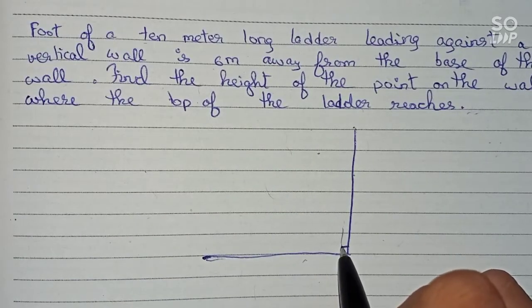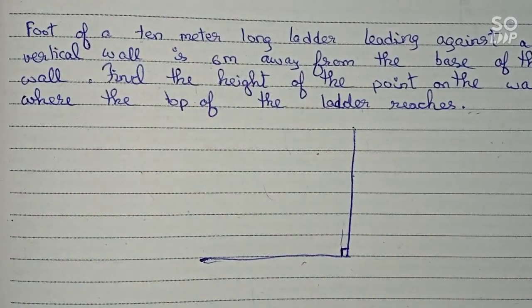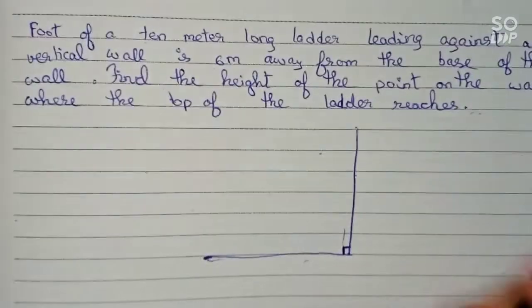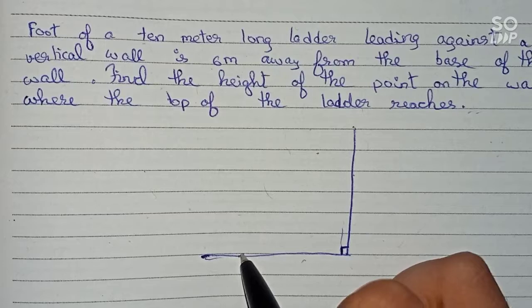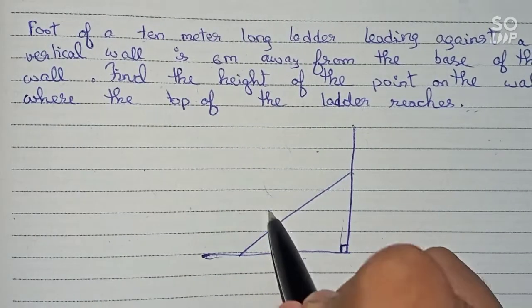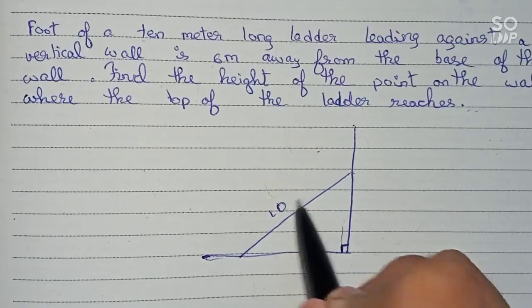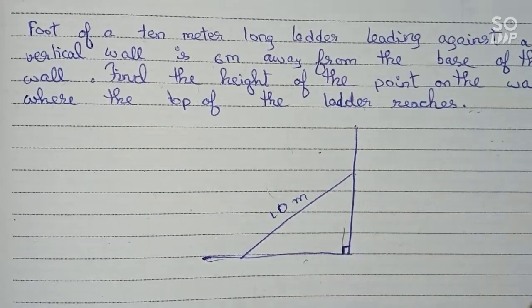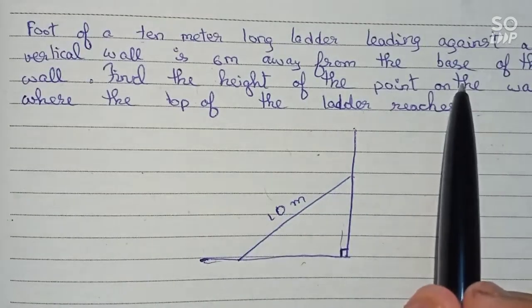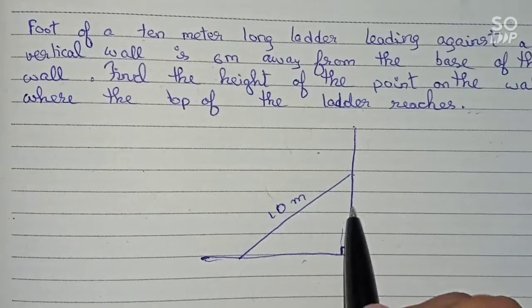Now it is given that a ladder is 10 meters long - sorry, 10 meters long - so suppose this is a ladder leaning against the wall. So this will be 10 meters. And it is also given that it is 6 meters away from the base. So therefore, 6 meters away from the base means here is the base and here is the ladder.